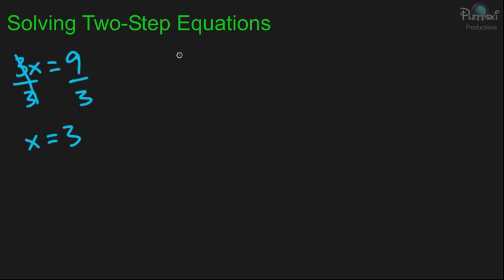And an example of this could be 5x minus 6 equals negative 21. Okay, you'll see here what's going on. You have 5 times a number, and then you take 6 away from that number, and that should equal negative 21.